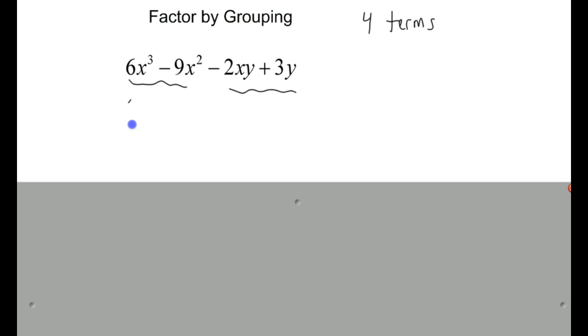So I'm going to say 6x cubed minus 9x squared. You always want a plus sign in between the two parentheses here. That's where this gets a little tricky.